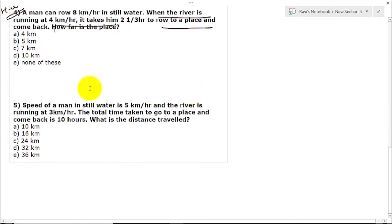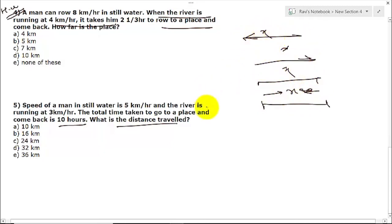Let us go to question number five. This is the last question in our session. Speed of a man in still water is 5 km per hour and the river is running at a certain speed. Total time to go to a place is 10 hours. What is the distance traveled? You must remember - this is x kilometer while going and while coming, so total distance is 2x. So while going it covers x, while coming it also covers x. Total time it takes is 10 hours. So 10 equals x by downstream or upstream?